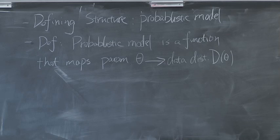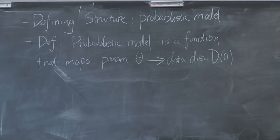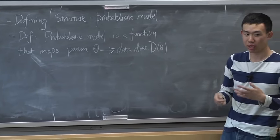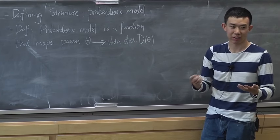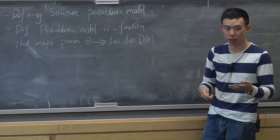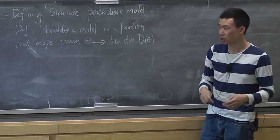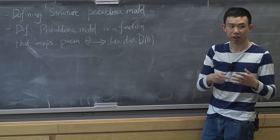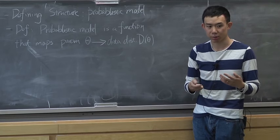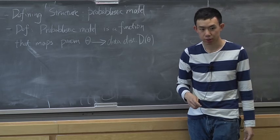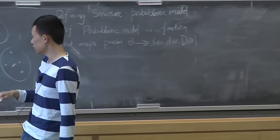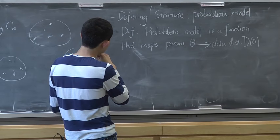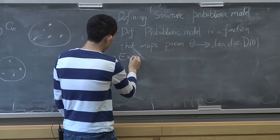One of the simplest probabilistic models is a Gaussian random variable. For a Gaussian random variable, we specify the mean and variance, and once we know those, we can sample points from this distribution. The learning problem then corresponds to: given many samples from this Gaussian distribution, estimate the mean and variance. So the learning problem is really the inverse of the data generating process.